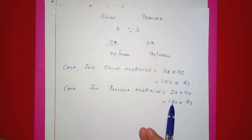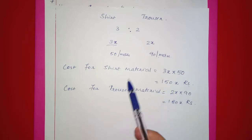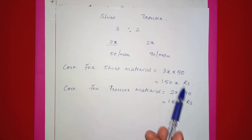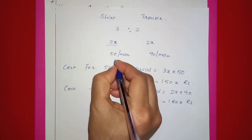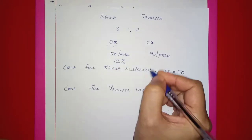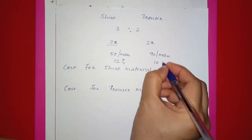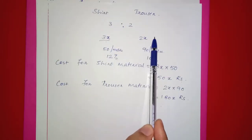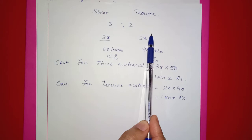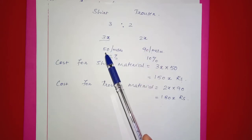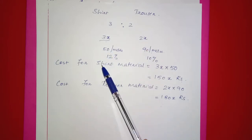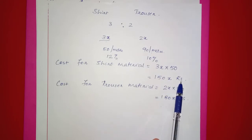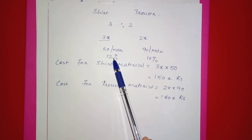The ratio gives us shirt material as 3x meters and trouser material as 2x meters. The shirt material has a 12% profit and the trouser material has a 10% profit. First, the cost price of the shirt material is 150x rupees — that is 3x meters at Rs.50 per meter.